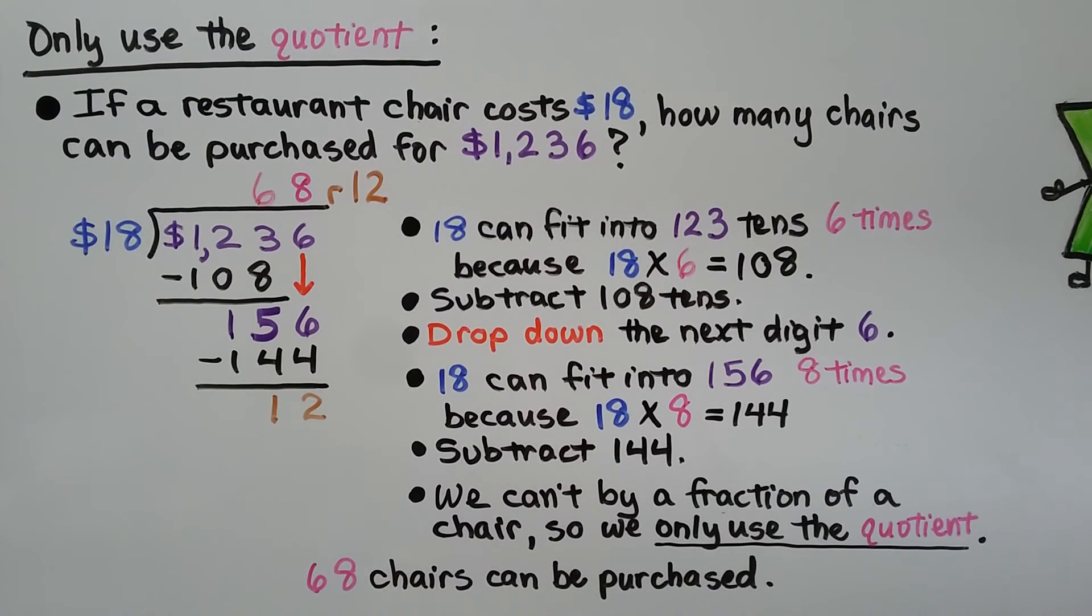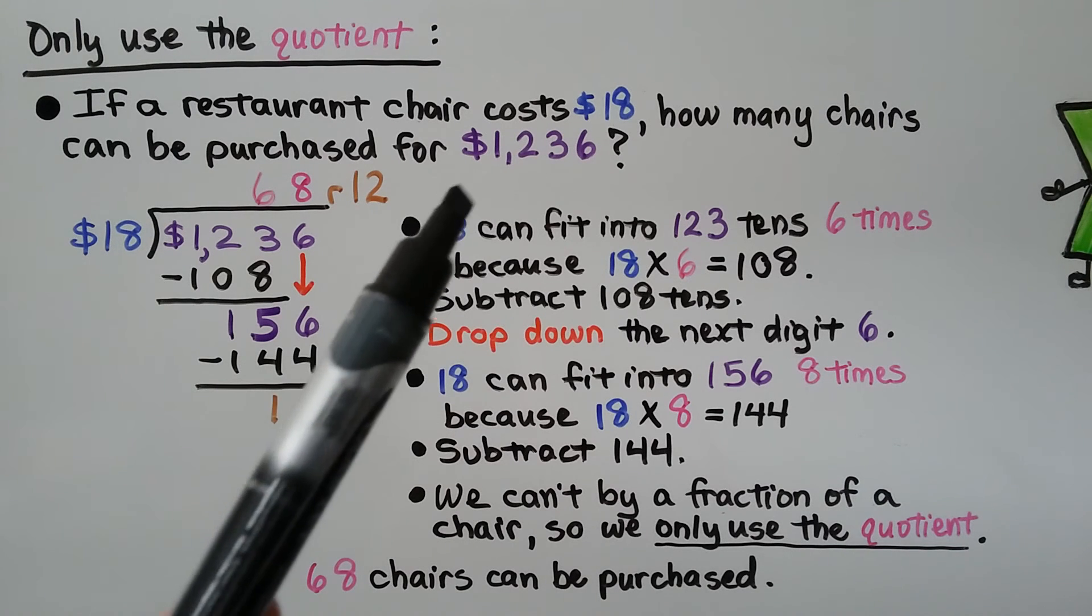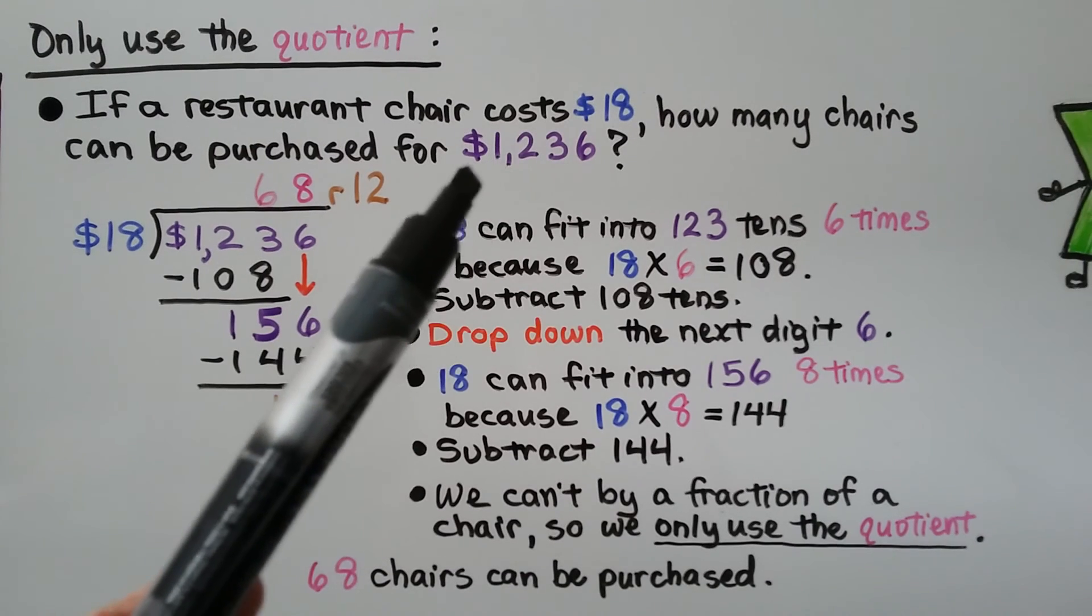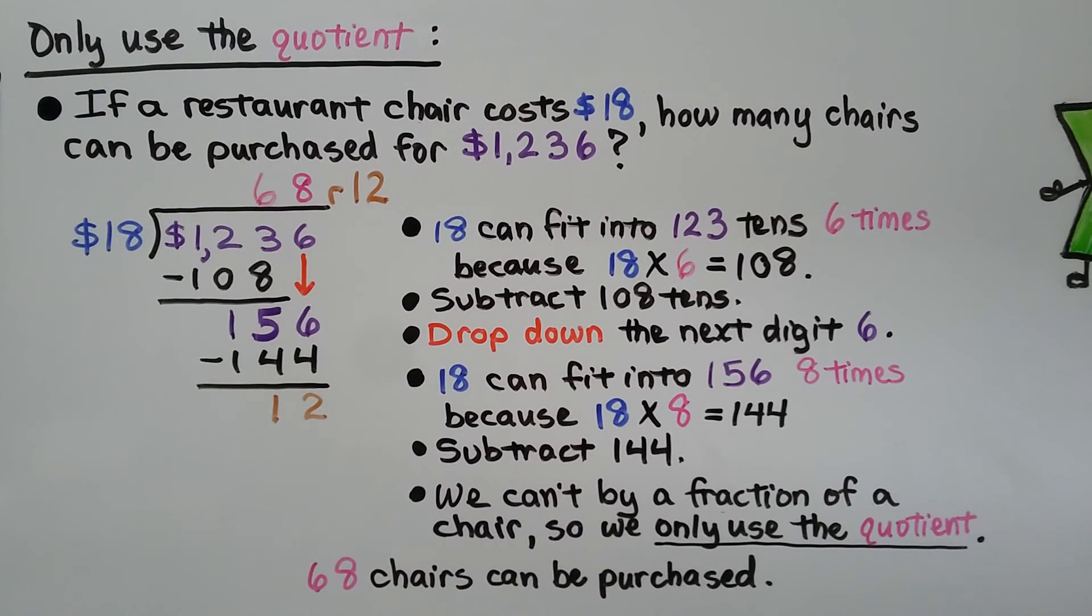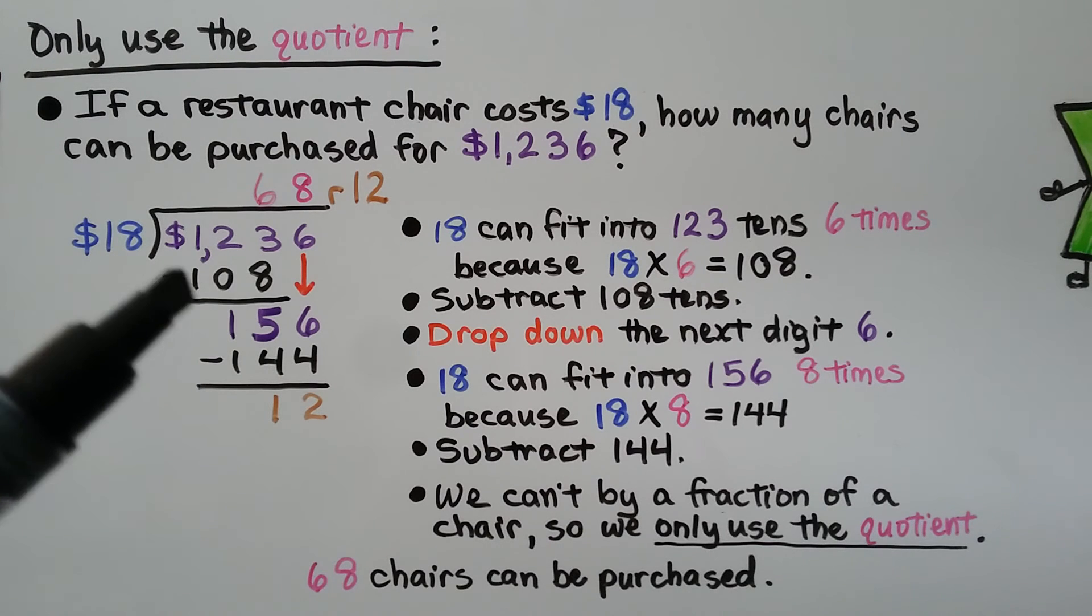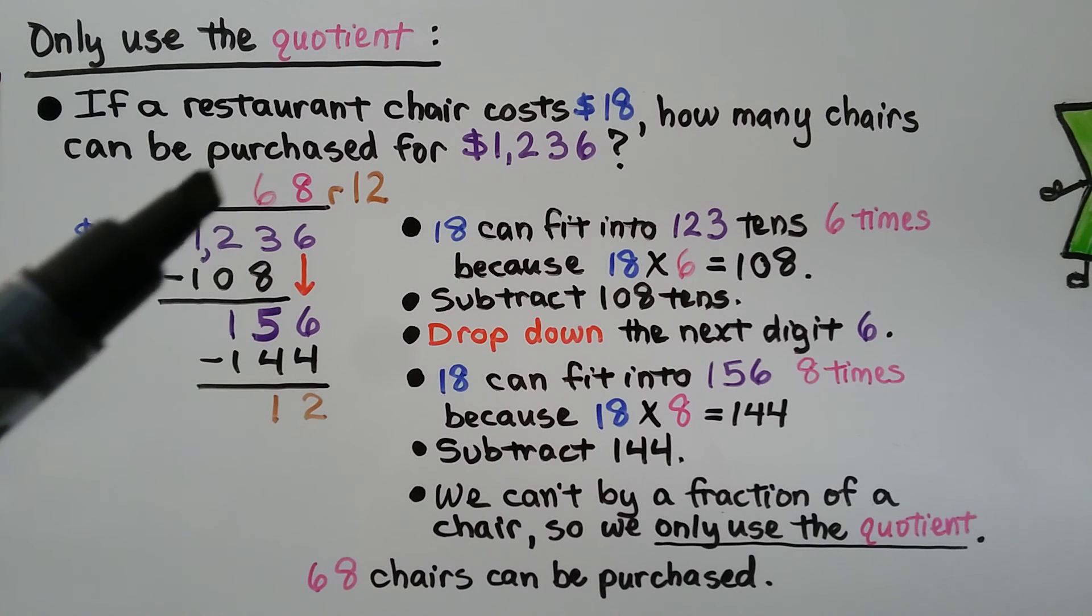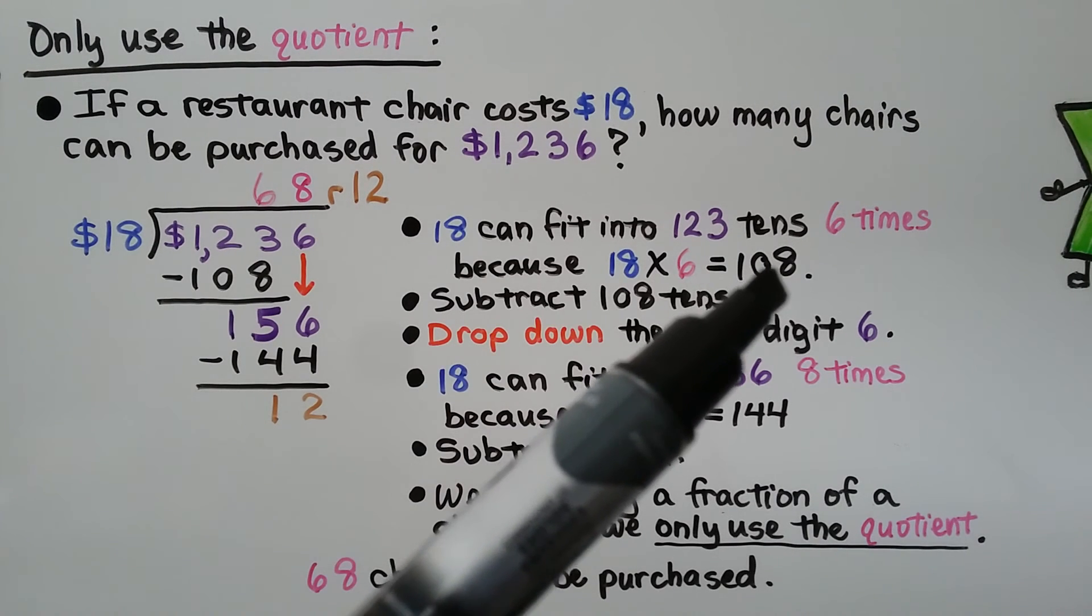Here's an example of only using the quotient as the answer. If a restaurant chair costs $18, how many chairs can be purchased for $1,236? So imagine a restaurant owner. This is all the money he has and he needs to buy chairs at $18 a piece. We need to figure out how many chairs he can buy. We do $1,236 divided by $18.